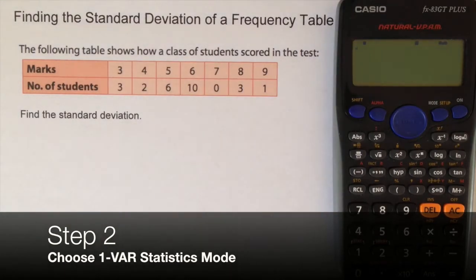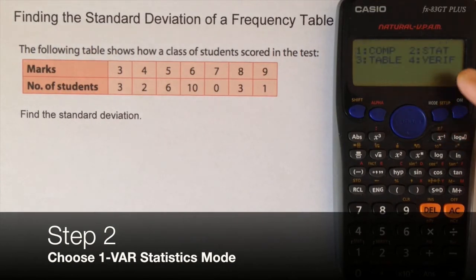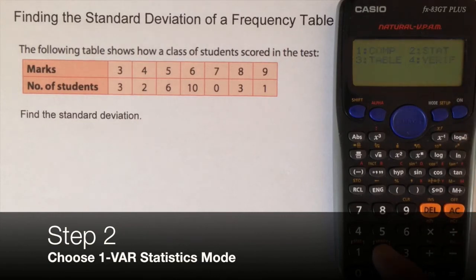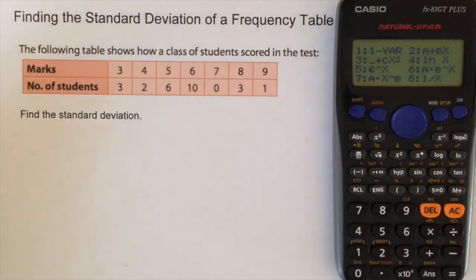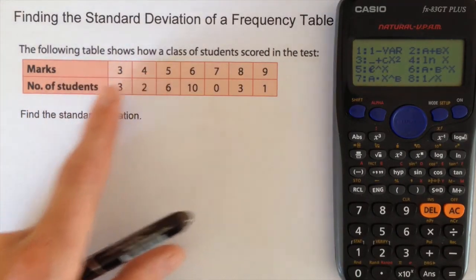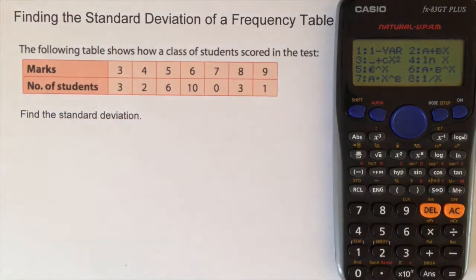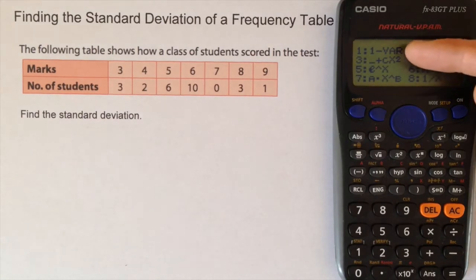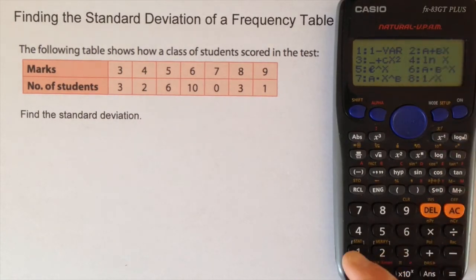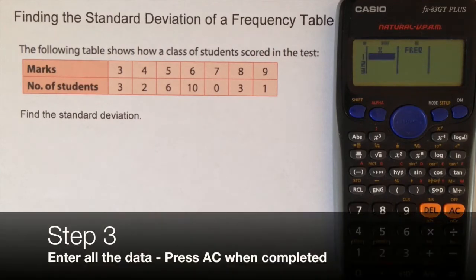Now I want to enter this data into the calculator, so I'm going to turn the calculator to statistics mode. So mode and option two is statistics. In this set of data, the marks is the variable, and the number of students is the frequency. So there is only one variable. Option one here is for one variable. I choose option one. And now I can see it's ready for me to enter the data into the table.